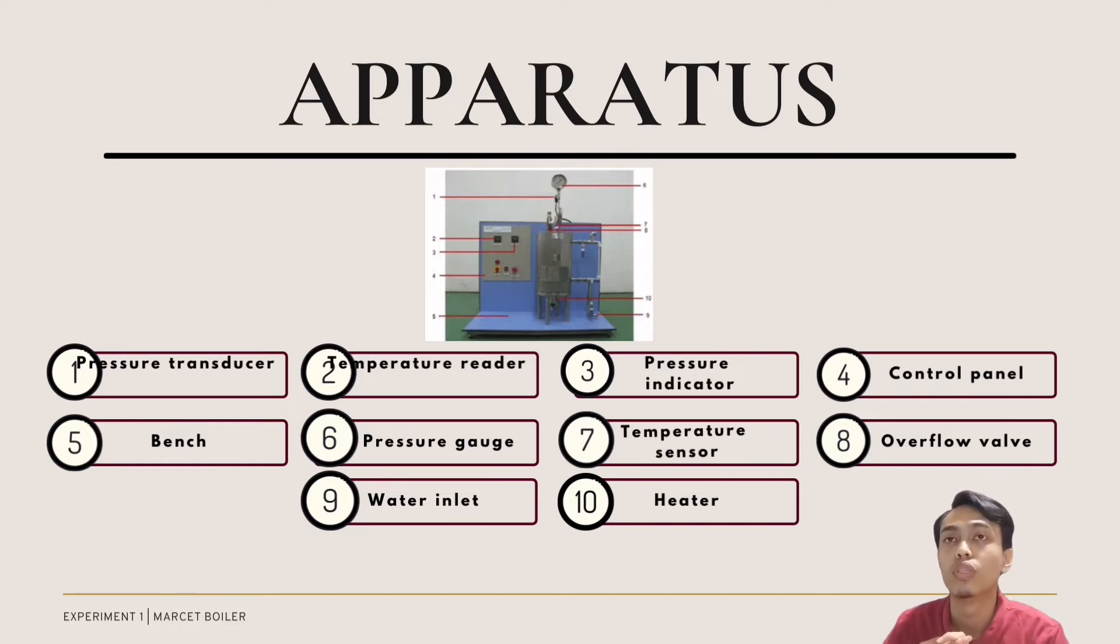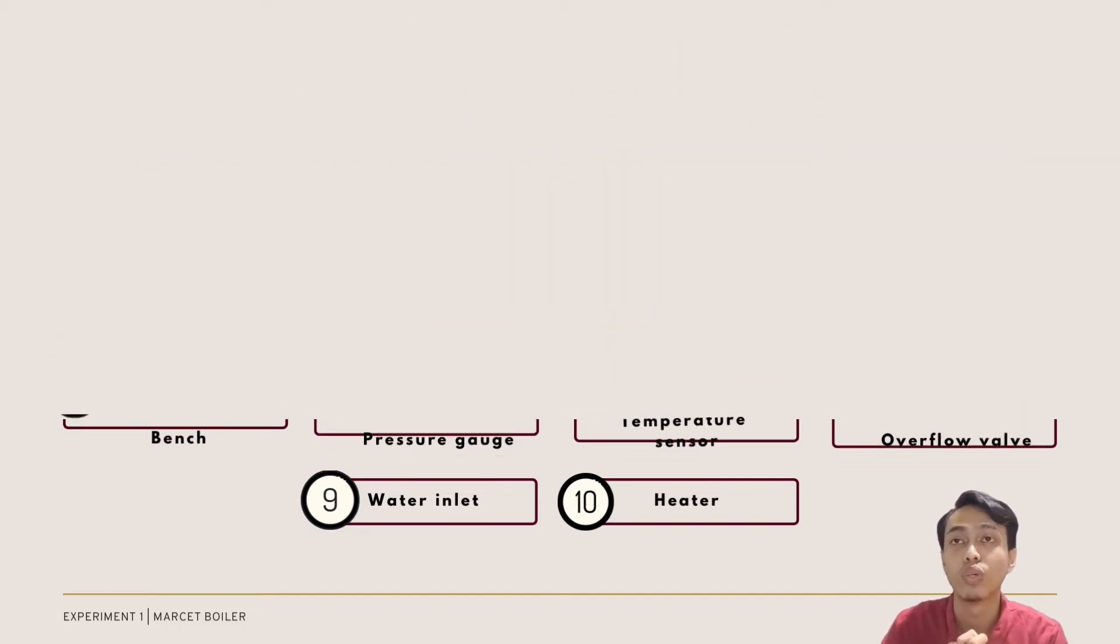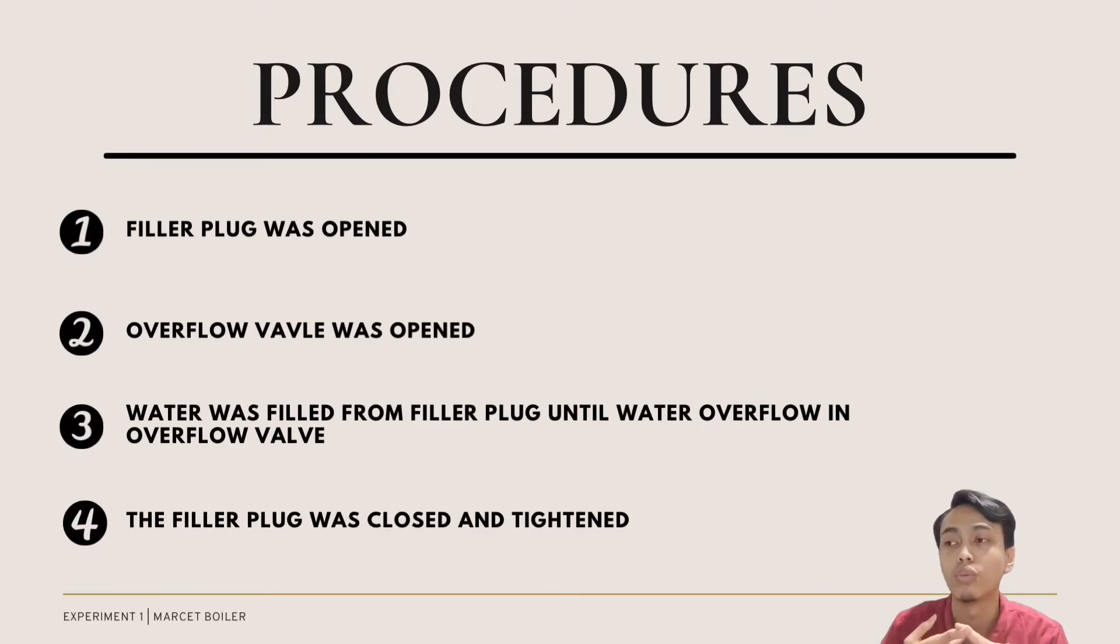Then, we move to the procedure. The first step: open the filler plug with the spanner. Second, open the overflow valve. When both are open, fill the water from the filler plug until the water overflows in the overflow valve. Once the water overflows in the overflow valve, close the filler plug and tighten it.